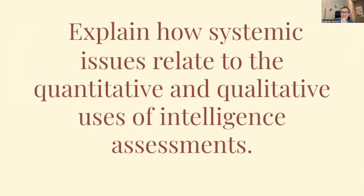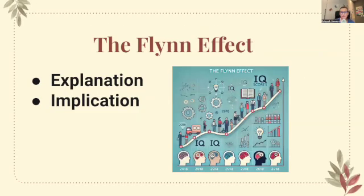Now we're going to go into CED question number three: explain how systemic issues relate to the quantitative and qualitative uses of intelligence assessment. First, the Flynn effect. Over the past century, IQ scores have generally increased worldwide — a phenomenon known as the Flynn effect. This rise is attributed to various societal improvements such as increased access to education, better healthcare, and improved nutrition.